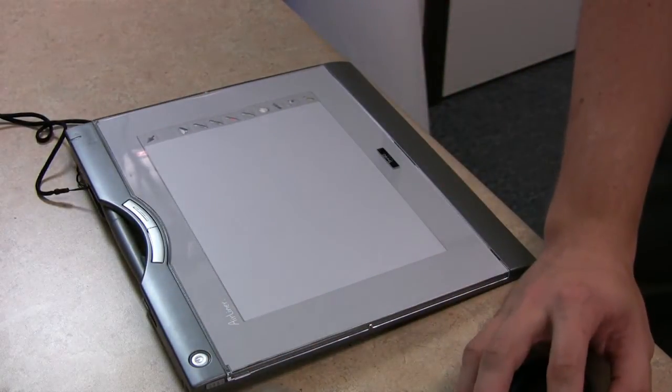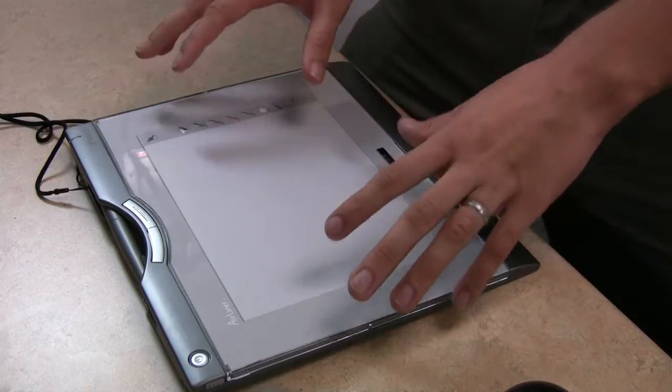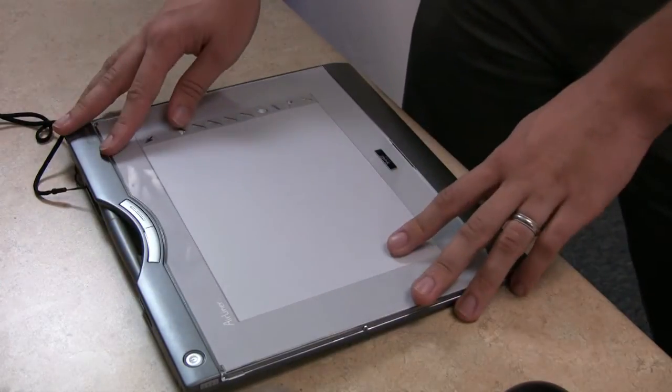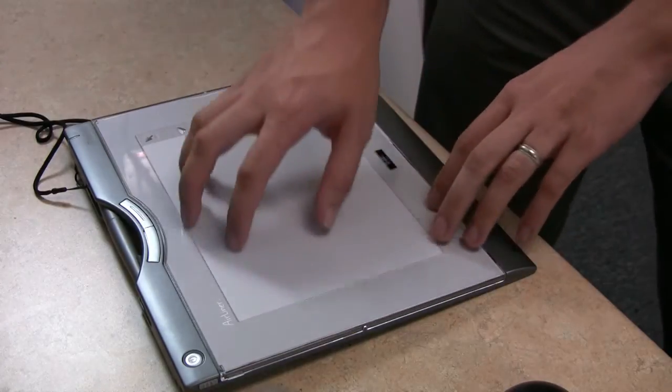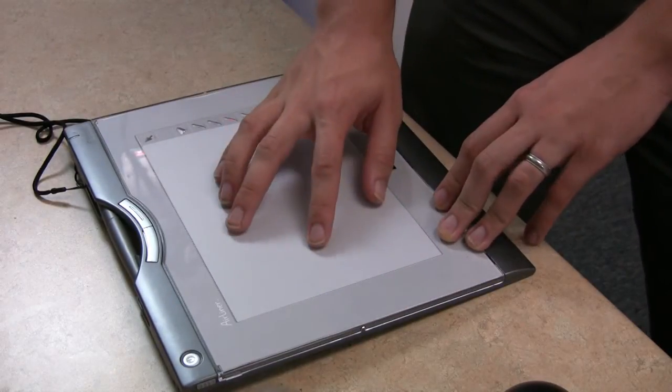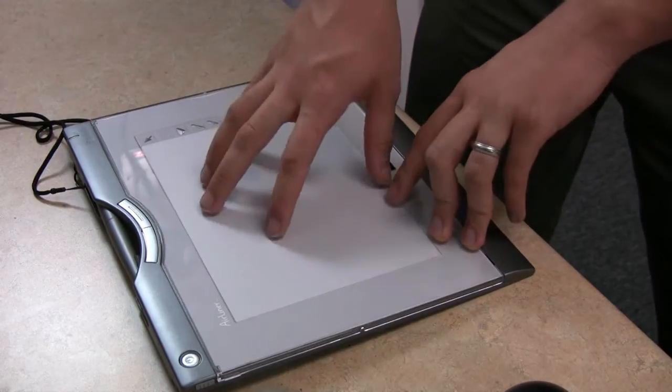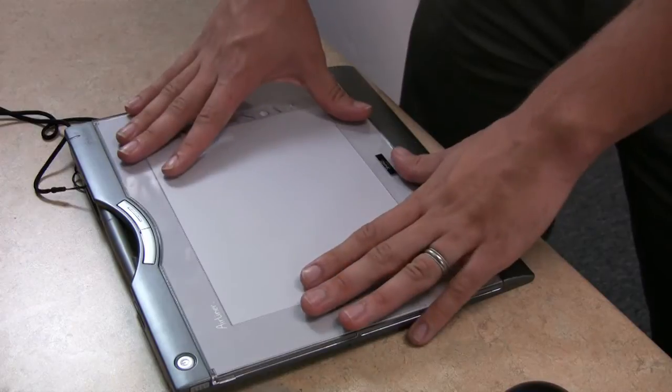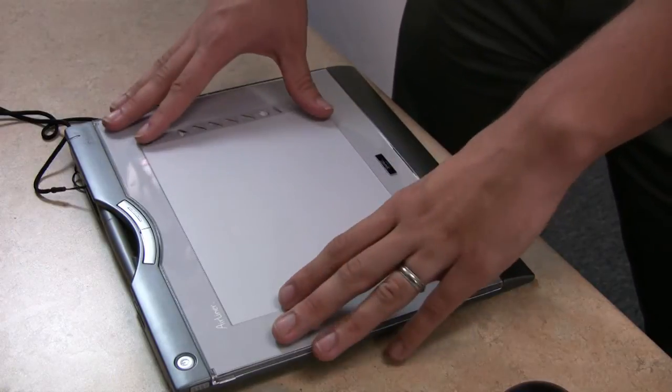As far as the actual dimensions of the device, it's 11 by about 10 and 8, and the actual usable surface, which is in the center part here, is 7 and 3 quarters by 9 and 3 quarters. So it gives you a pretty good area to work with.